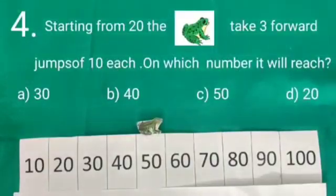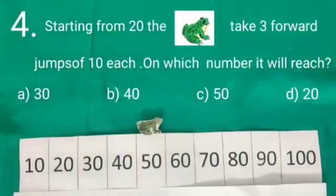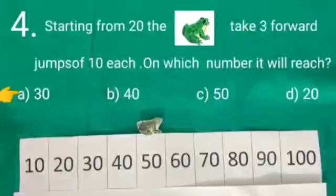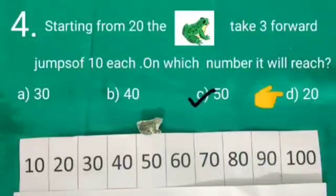Starting from 20, while taking 3 forward jumps of 10 each, frog will reach on number 50. Now let's read given options. Option A is 30, which is not correct. Option B is 40, which is not correct. Option C is 50, which is correct. So we will put tick on option C and option D is not correct.